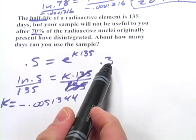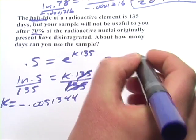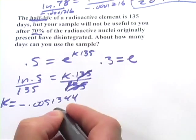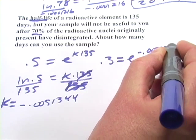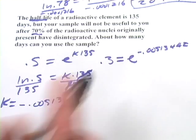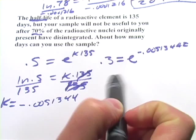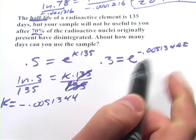So we'll put a 0.3 here and set up our equation. E to the k, which we now know, times t, and t is in days, and we have to solve that for t. And that's going to be the number of days that our sample is good for.